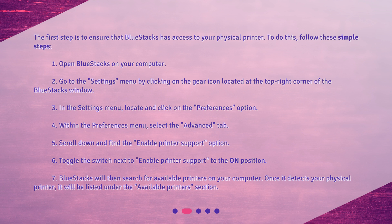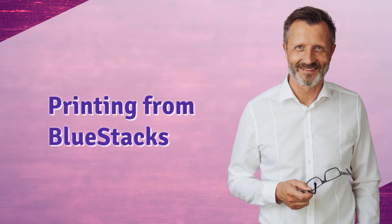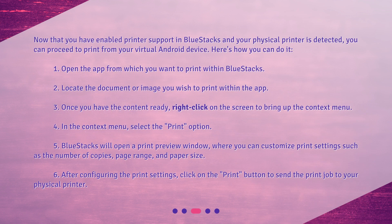7. BlueStacks will then search for available printers on your computer. Once it detects your physical printer, it will be listed under the Available Printers section. Now that you have enabled printer support in BlueStacks and your physical printer is detected, you can proceed to print from your virtual Android device.